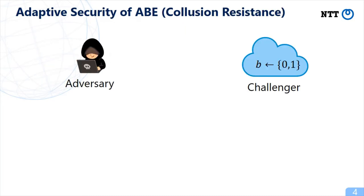The standard security notion for attribute-based encryption is adaptive security, or collision resistance. That is, gathering unqualified secret keys is not helpful for decrypting a ciphertext.